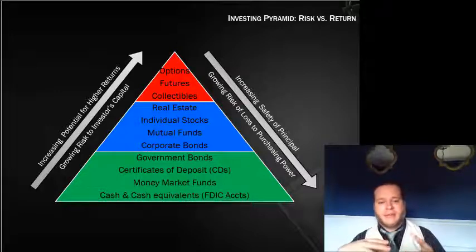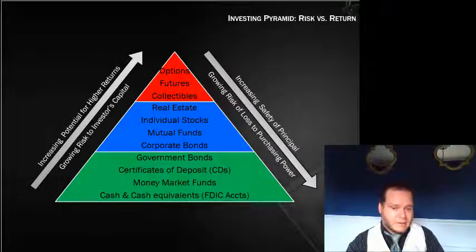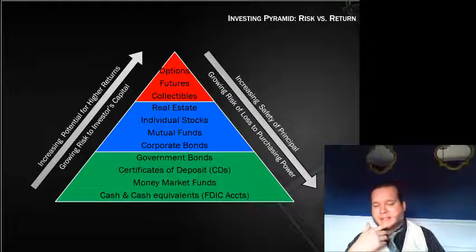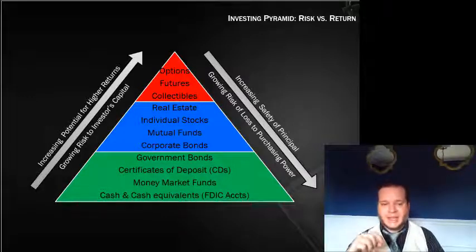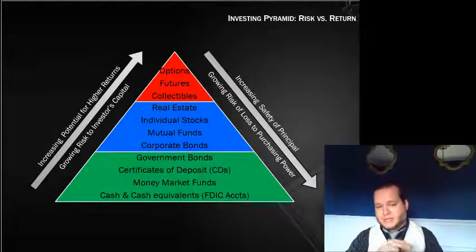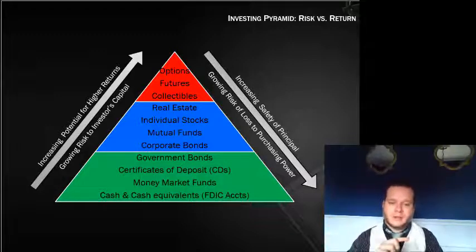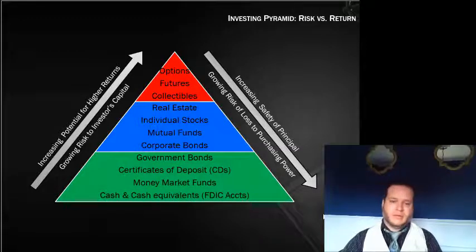You need some assets at the bottom of the pyramid for the liquidity your checking account provides, but you also need assets in the middle — the sweet spot: real estate, stocks, mutual funds, and bonds. These are what people traditionally think of as investments and they get a good balance of risk, return, and liquidity. You need some at the bottom to keep the household functioning, and a lot in the middle to earn the returns needed to keep up with inflation and retire successfully.